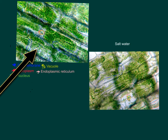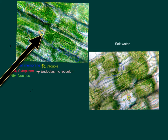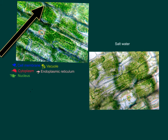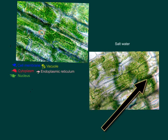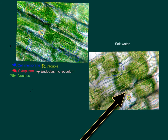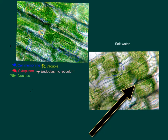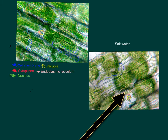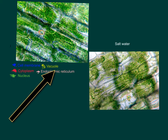Blue is the cell membrane, red is the cytoplasm, green is the nucleus, yellow is a vacuole, and the pink is the endoplasmic reticulum. And I'm handing it off to Brad.